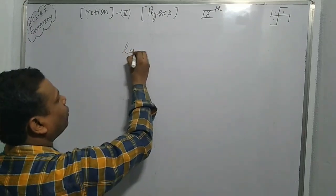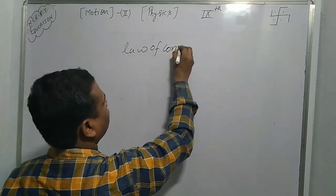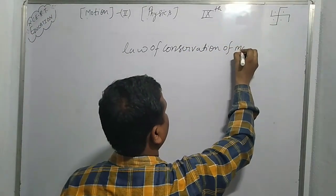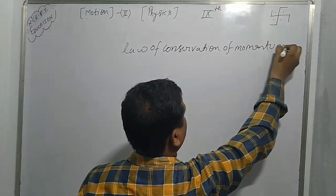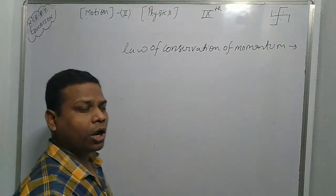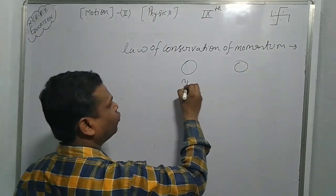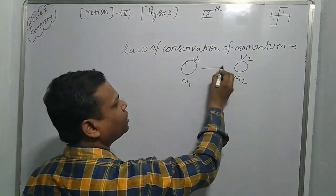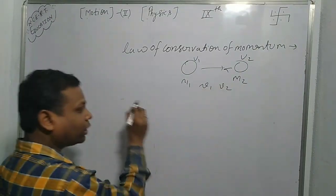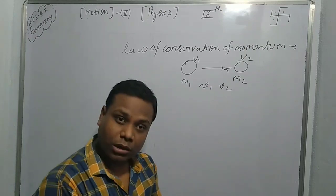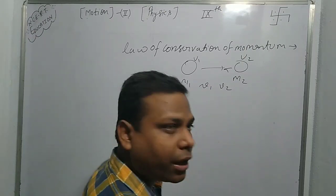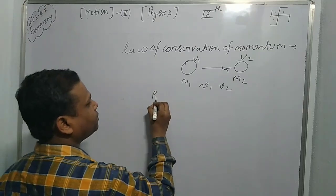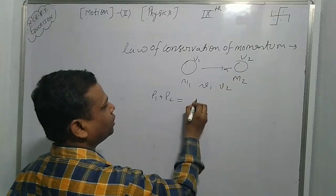Now the Law of Conservation of Momentum. If two objects with masses m1 and m2 have initial velocities u1 and u2, and after collision they have velocities v1 and v2, then the total momentum before collision equals the total momentum after collision. That means p1 plus p2 equals the total momentum after collision.